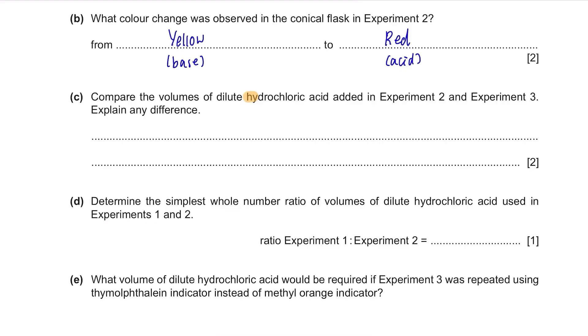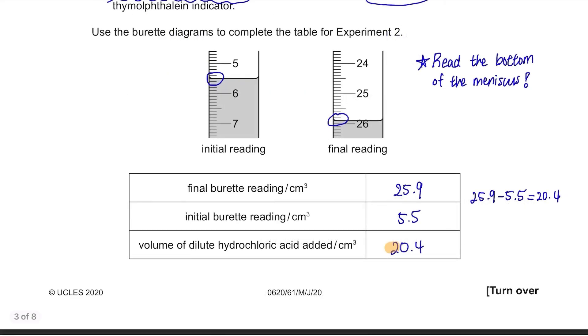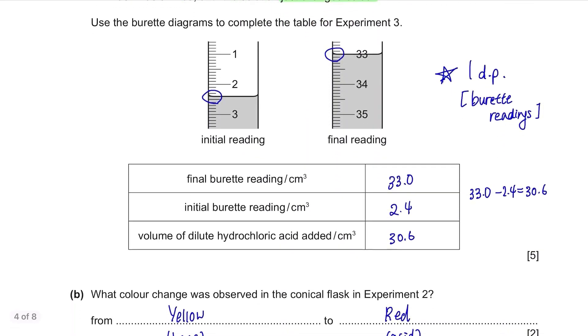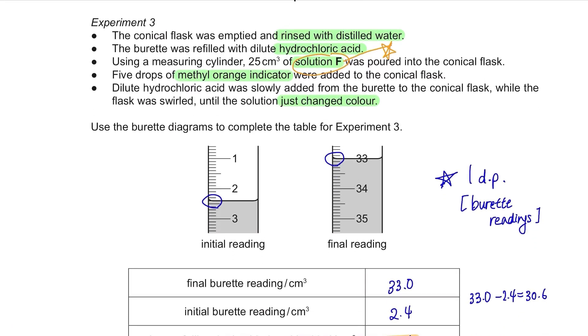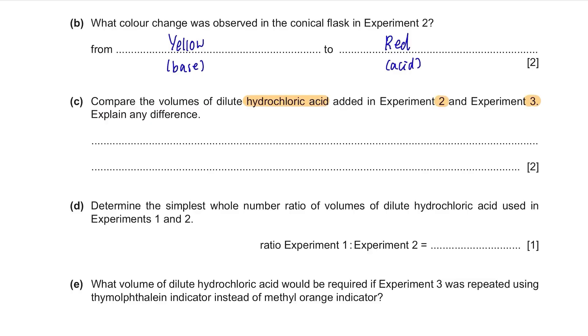Part C. Compare the volumes of dilute hydrochloric acid added in experiment 2 and experiment 3. Explain any difference. In experiment 2, we found that they added 20.4 cm³ and in experiment 3, they added 30.6 cm³. In experiment 2, they used solution E and in experiment 3, they used solution F. Both are solutions of sodium carbonate but somehow, solution F required more hydrochloric acid to change colour. This is because solution F is more concentrated than solution E. As they mentioned the word compare, we need to state some numbers as well. 30.6 is 1.5 times more than 20.4 so we can say that solution F is 1.5 times more concentrated than solution E.